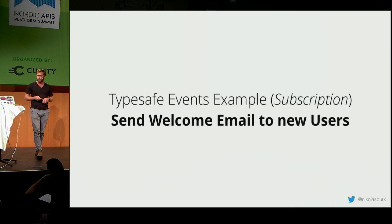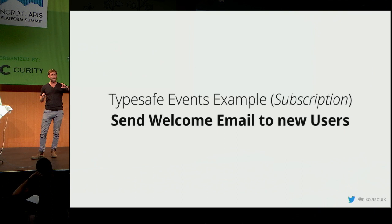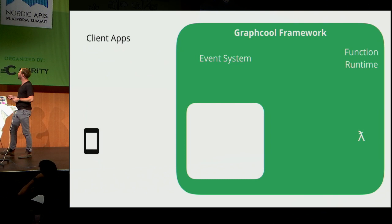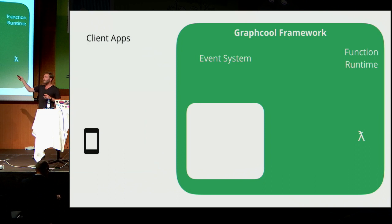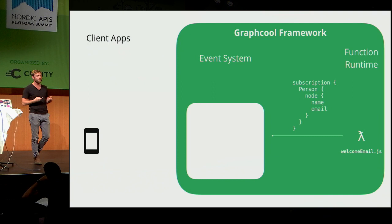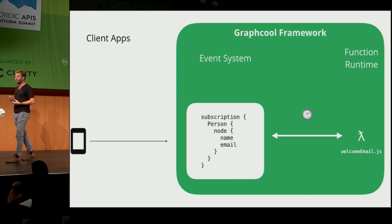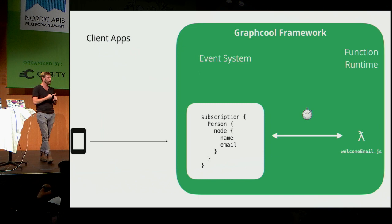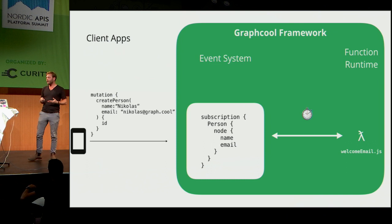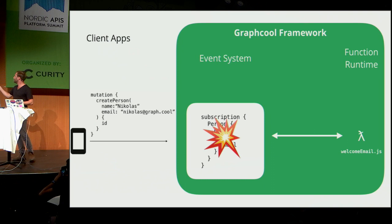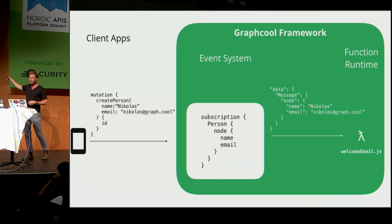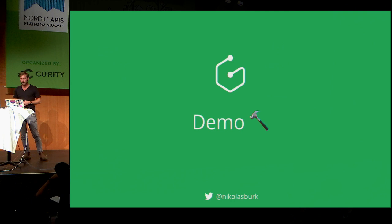Let's look at how subscription functions work. Using the Person type, we want to send a welcome email to a new user. On the right is the function runtime and the event system; client applications interact on the left. We send a GraphQL subscription query to the event system, which stores it and waits for events related to the Person type — person created, updated, or deleted.